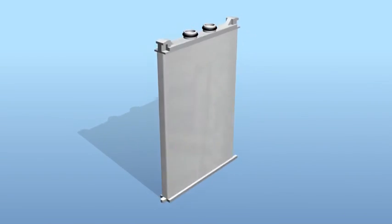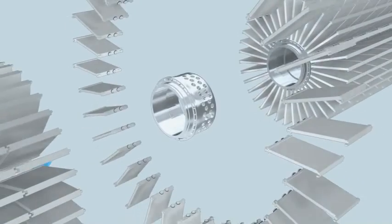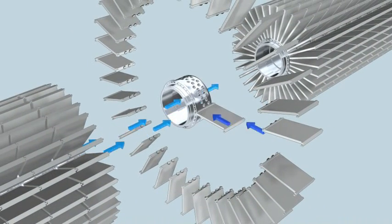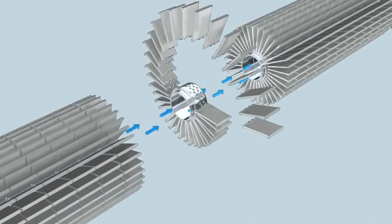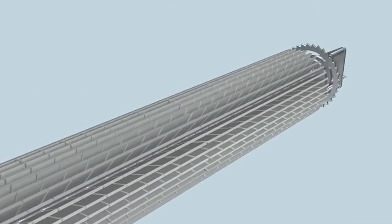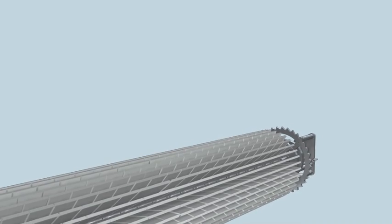This element is called a cassette. Thirty-five cassettes connected to a joined-in collector pipe unit form a package. Twenty-six packages attached to each other form a cartridge which is installed in the filter housing.